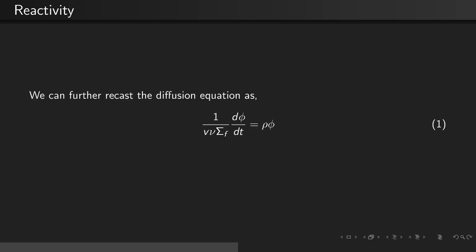Thus, we can further recast the diffusion equation as 1 over the velocity times nu sigma f times d phi dt equals rho times the flux.